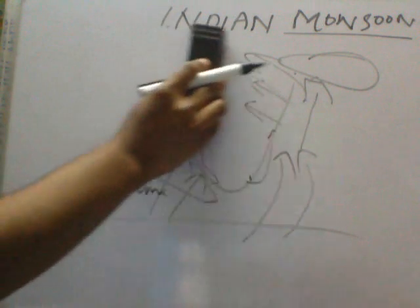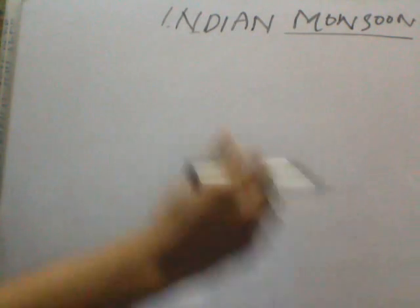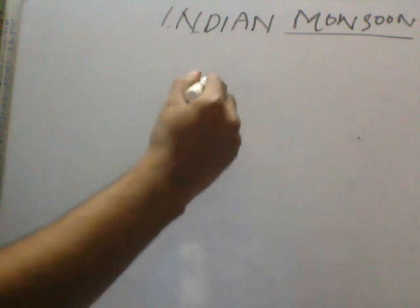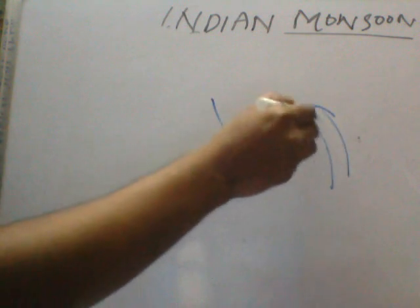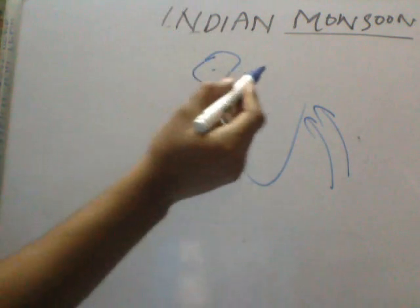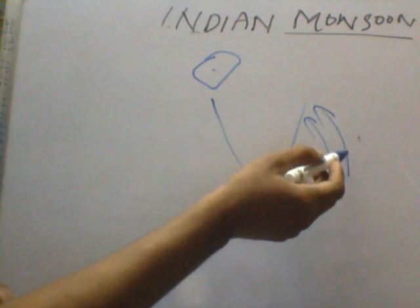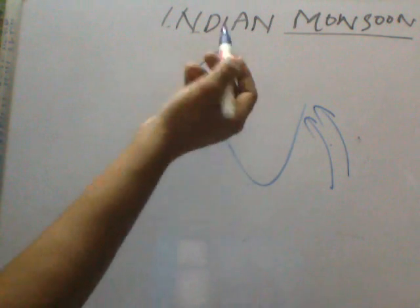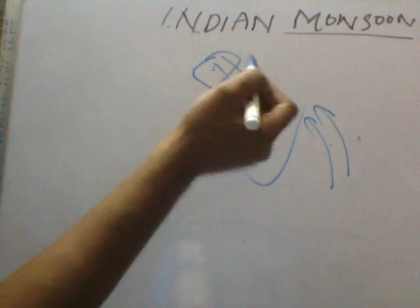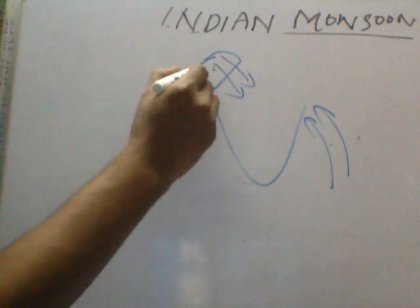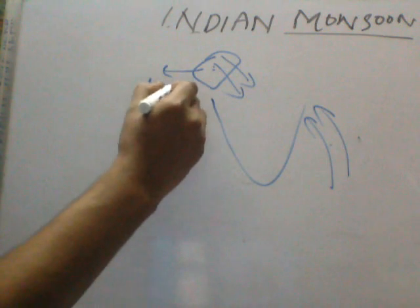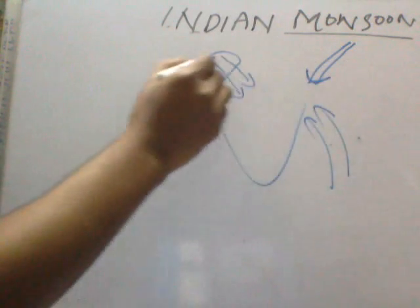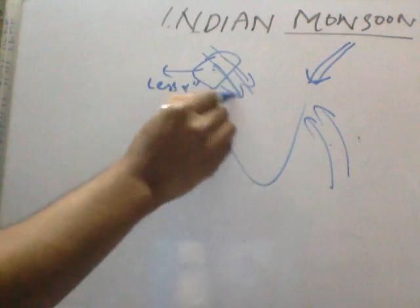By around September, the Bay of Bengal branch winds reach Rajasthan. However, by that time the moisture carried by the winds has been completely exhausted. The retreating monsoon will then cause rainfall — starting its withdrawal from Rajasthan first. The retreating monsoon causes rainfall in three regions: the Tamil Nadu coast, the Ladakh region, and the Shivalik region.